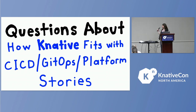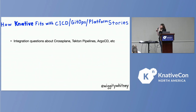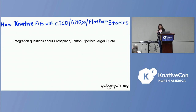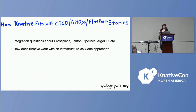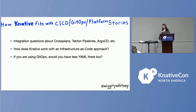The next group of questions is about how Knative fits in with the CI/CD, GitOps, and platform building story. All the tools I was talking about before — Crossplane, Tekton Pipelines, Argo CD, etc. — I want to point out that this category definitely has overlap with tooling integration. A question about whether Knative integrates with Crossplane is a question about platform building. A question about whether it integrates with Tekton Pipelines is a question about CI/CD. And then some more straightforward ones: How does Knative work with an infrastructure-as-code approach? If you're using GitOps, would you have less YAML there too? And does it work with GitLab CI/CD?